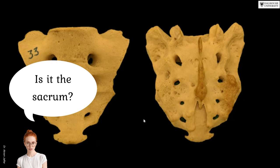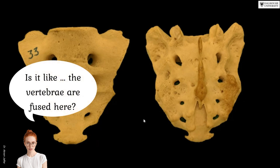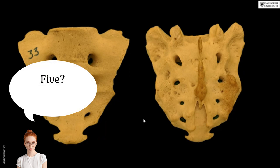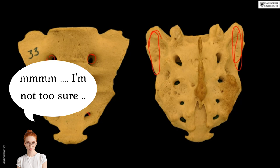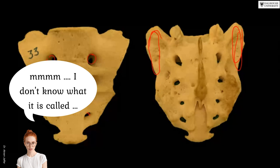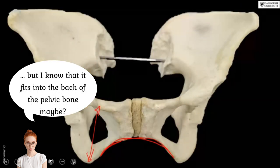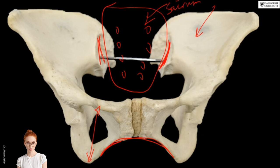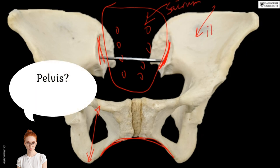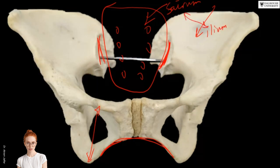Can you identify this bone and tell me something about it? It is the sacrum. How many vertebrae does it have? Five vertebrae — you can tell because there are four foramina here, so five vertebrae have four spaces in between them. This bone is the sacrum, and that other bone is the ilium, so this is the sacroiliac joint.